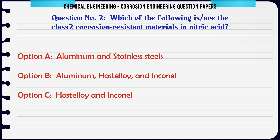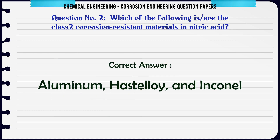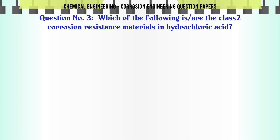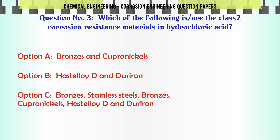Which of the following is/are the class 2 corrosion resistant materials in nitric acid? A. Aluminum and stainless steels. B. Aluminum, Hastelloy, and Inconel. C. Hastelloy and Inconel. D. Hastelloy and titanium. The correct answer is: Aluminum, Hastelloy, and Inconel.